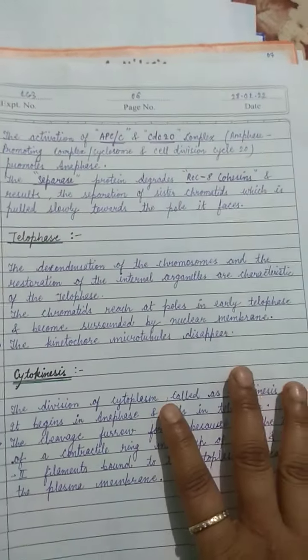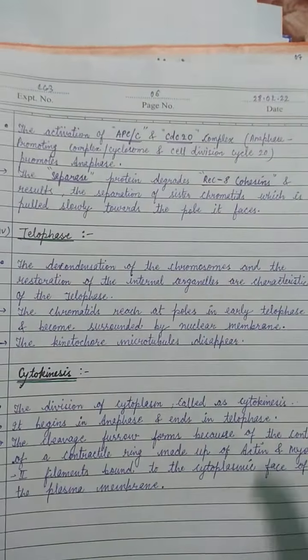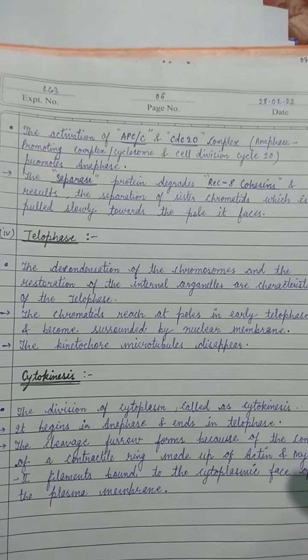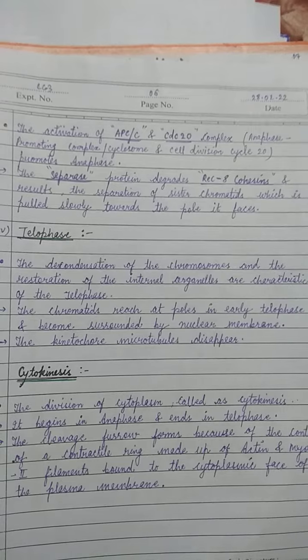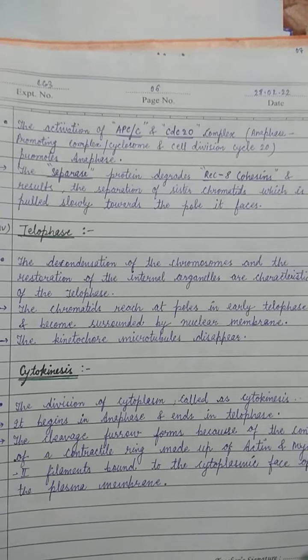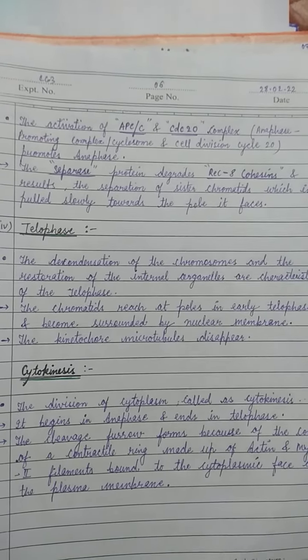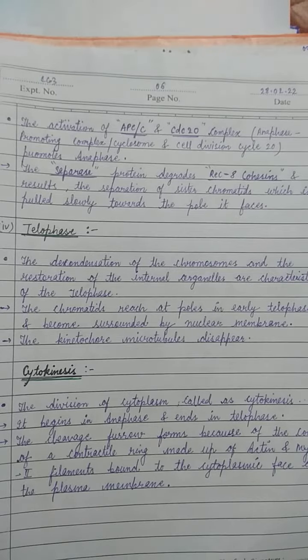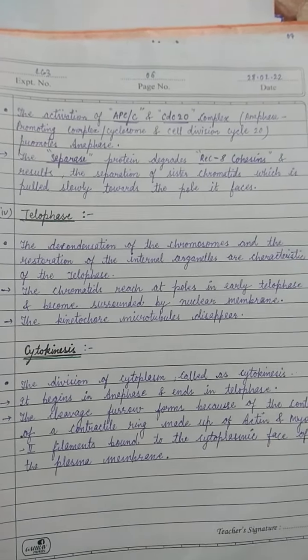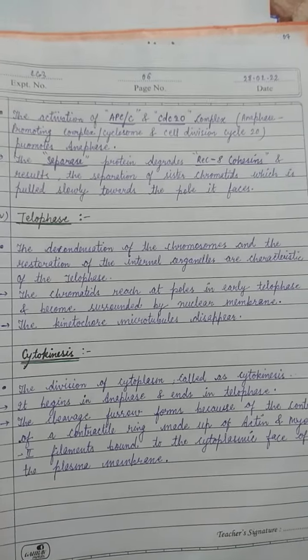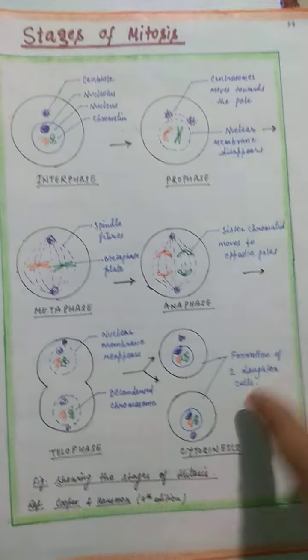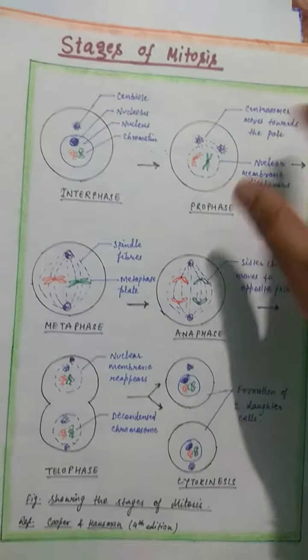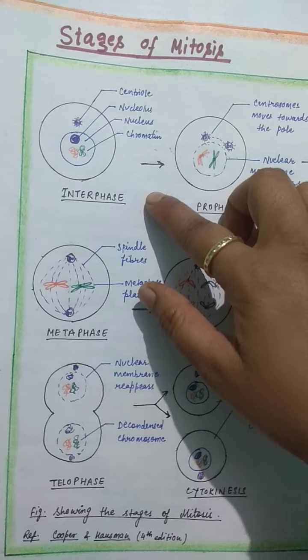In telophase, the two sister chromatids reach the poles. The nuclear envelope is re-formed and the nucleolus becomes visible again. The final step is cytokinesis, where two daughter cells are separated.